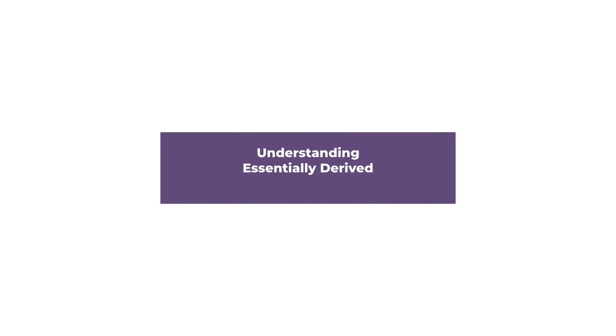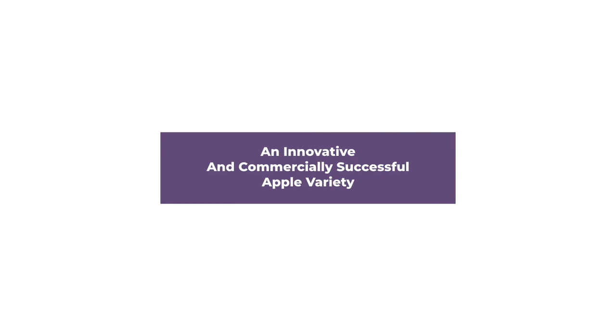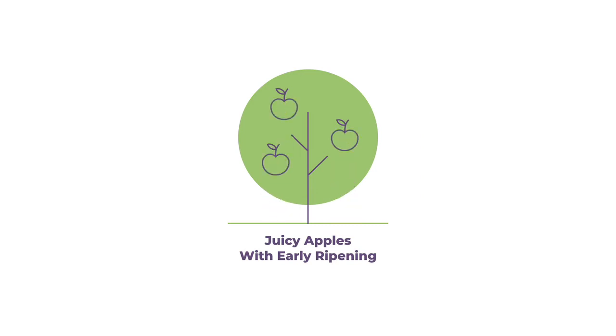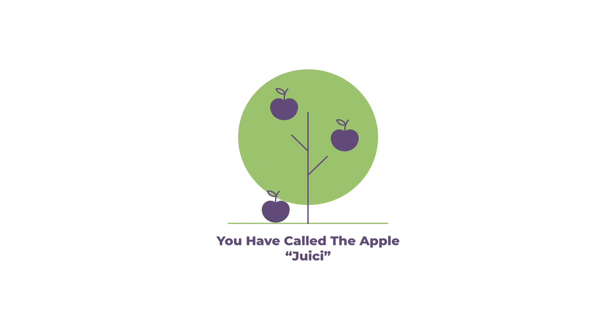Understanding essentially derived varieties: imagine you have worked for 20 years to develop an innovative and commercially successful apple variety that yields juicy apples with early ripening. You have called the apple 'Juicy' and registered a plant breeders' right to protect your innovation.